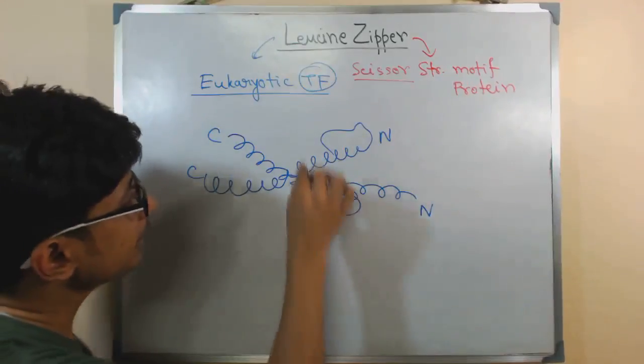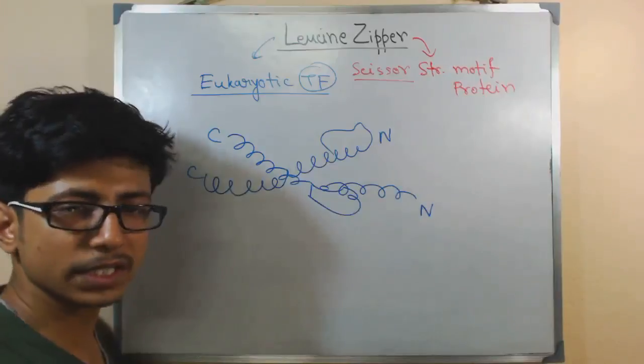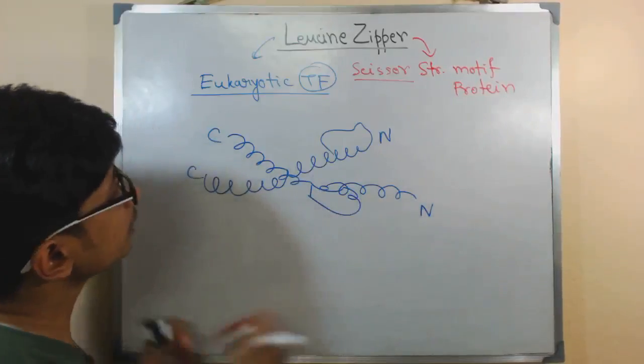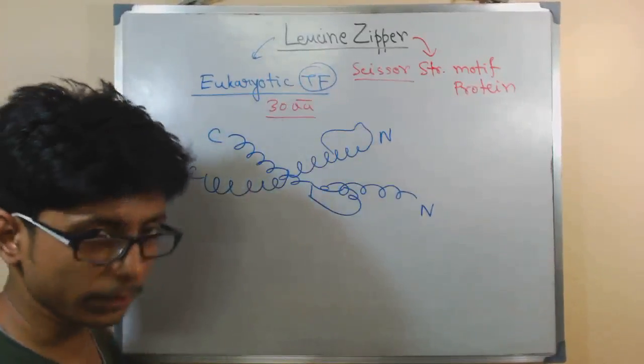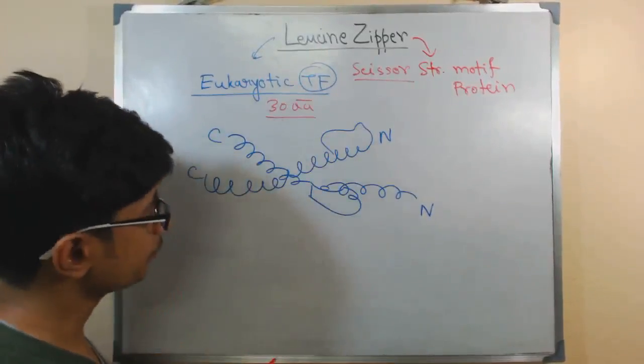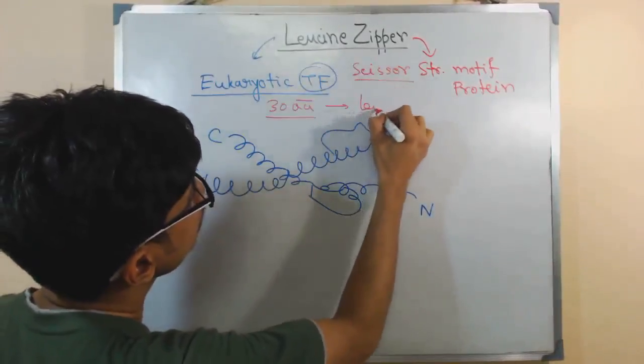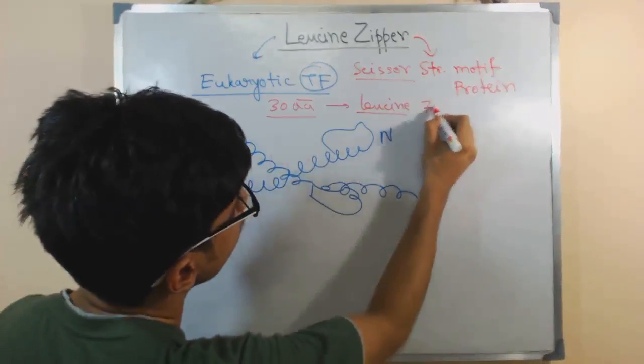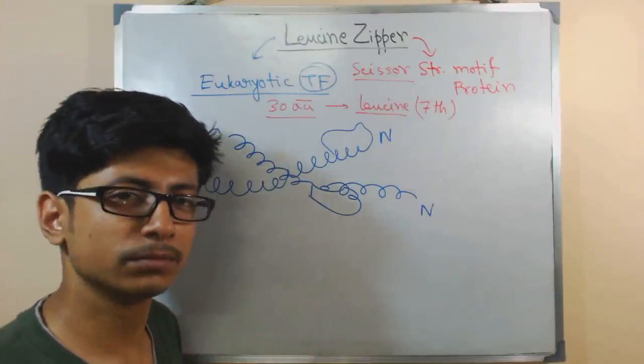In this case, each of those alpha helices can arrange for 30 to 50 or 60 amino acid segment containing section. In those 30 amino acids, let's say this is a 30 amino acid long protein. In that case, what we see is leucine to be repeated continuously in every 7th amino acid residue. That is why it is called leucine zipper.